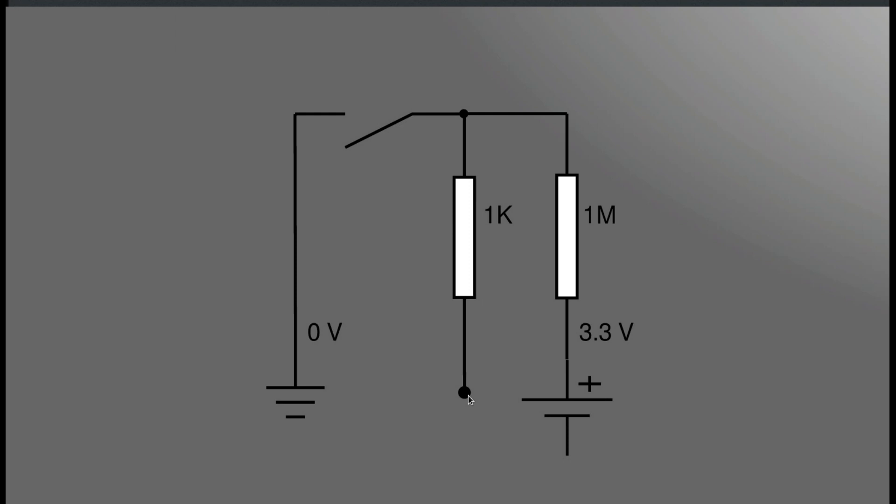Now let's look at the closed state. In the closed state, the ground is directly connected to this point over this wire.